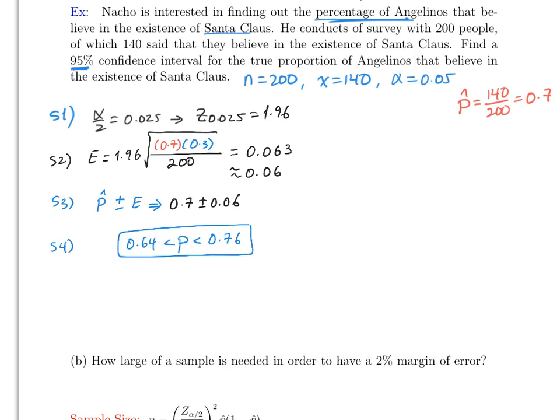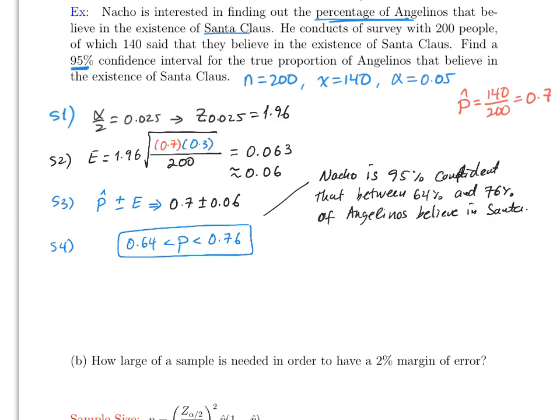And that's it. So therefore, this means Nacho is 95 percent confident that between 64 percent and 76 percent of Angelinos believe in Santa, which is probably the same Angelinos that believe the Dodgers are going to be champions anytime soon. Just kidding.